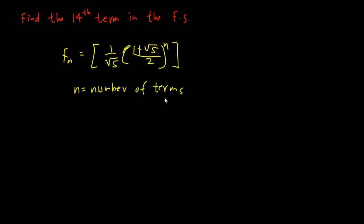So that is what we mean as our number of terms, the n. So we will try to solve this one. We have Fn is equal to 1 over square root of 5, so 1 plus square root of 5 over 2 raised to the power of 14.